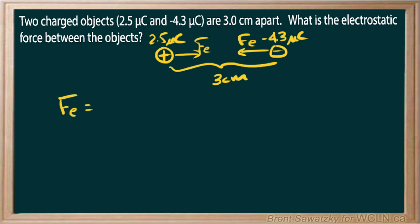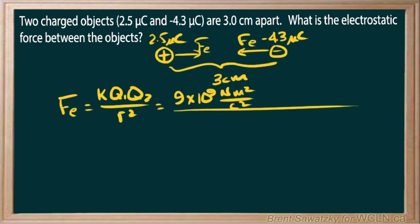At this point, perhaps going to your formula sheet to grab it. After doing a bunch of these questions, you'll probably no longer need your formula sheet, but probably do at this point. Our k is 9 times 10 to the 9, and we have newton meters squared per coulombs squared.